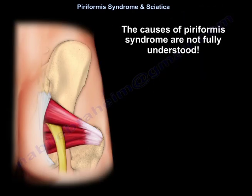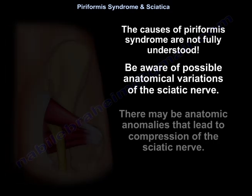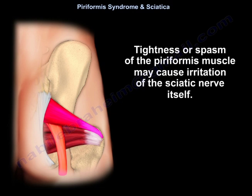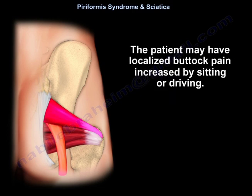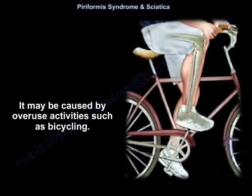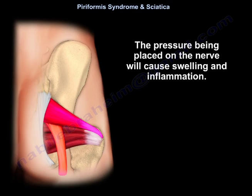The causes of piriformis syndrome are not fully understood. Be aware of possible anatomic variations of the sciatic nerve, and there might be anatomic anomalies that lead to compression of the sciatic nerve. Tightness or spasms of the piriformis muscle may cause irritation of the sciatic nerve itself. The patient may have localized buttock pain increased by sitting or driving, or it may be caused by overuse activities such as bicycling, and the pressure on the nerve will cause swelling and inflammation.